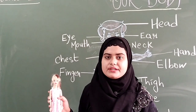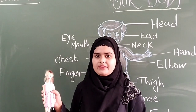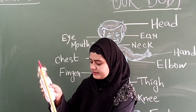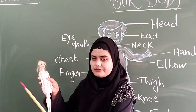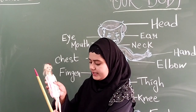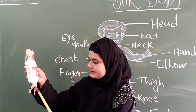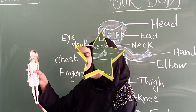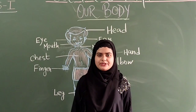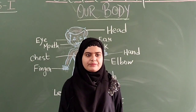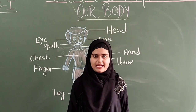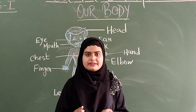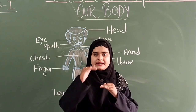How many fingers do we have? We have ten fingers. Then these are thigh. This is knee. We can bend with our knee. Then this is our leg. This is our foot. With our leg we can stand, walk, run, and climb.